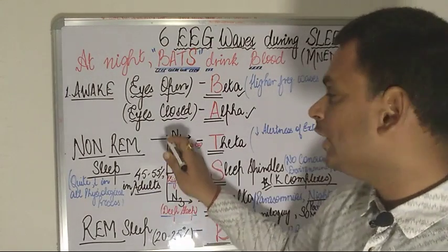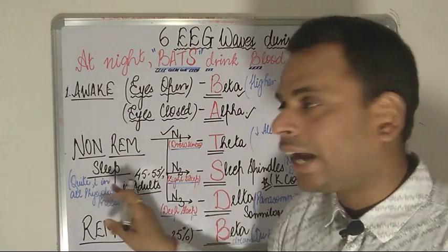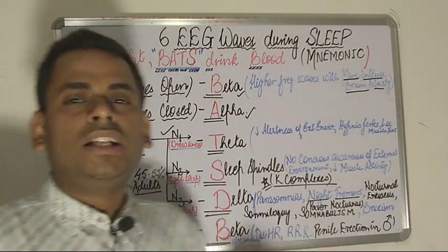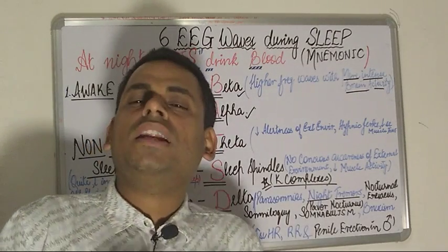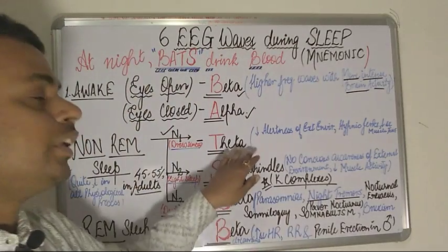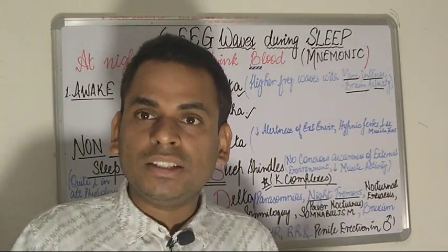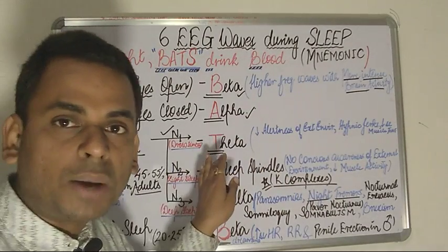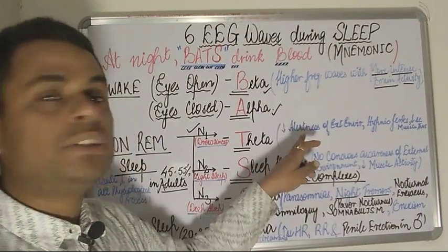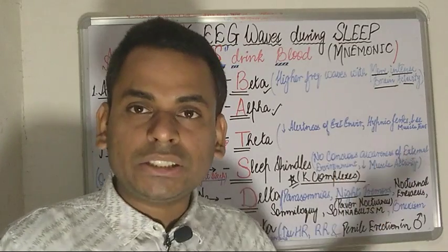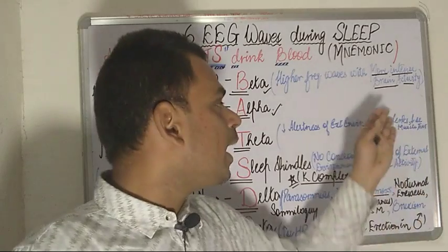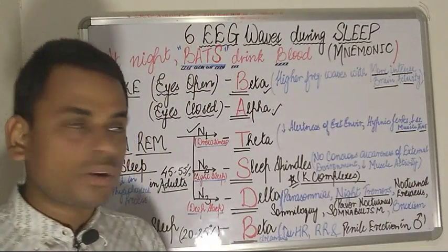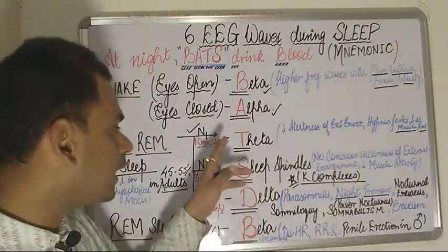The first stage, N1, is the stage of drowsiness. During N1, the person has a feeling of drowsiness, and the brain emits theta waves. The characteristic features of N1 include a decrease in alertness to the external environment, hypnic jerks can occur, and there is decreased muscular tone.